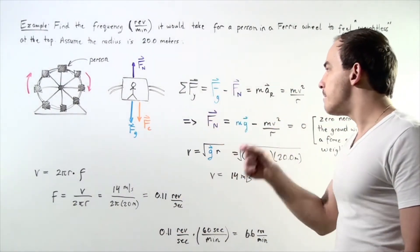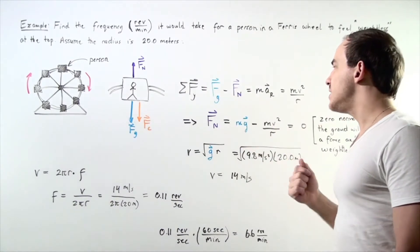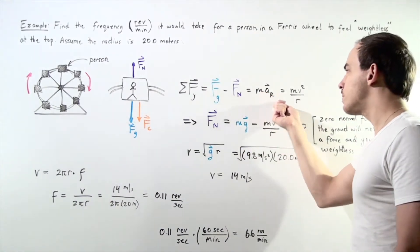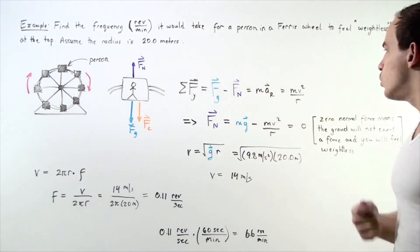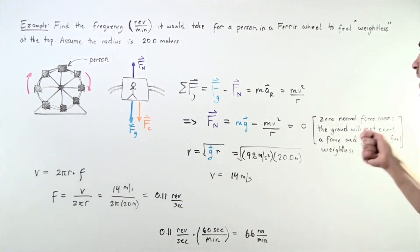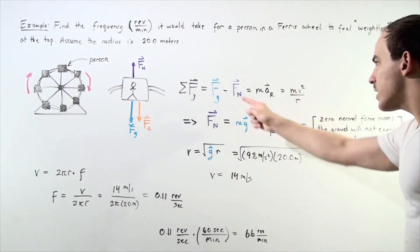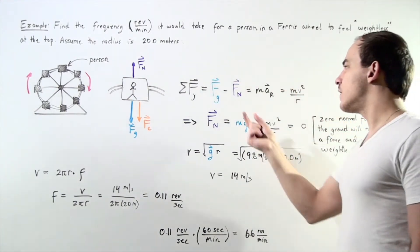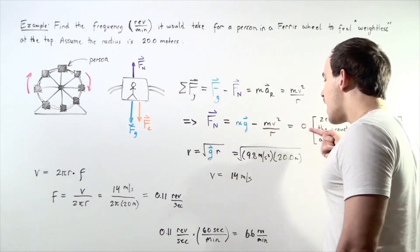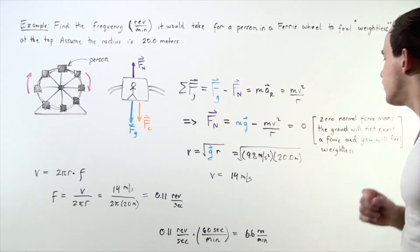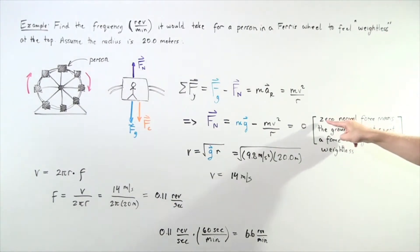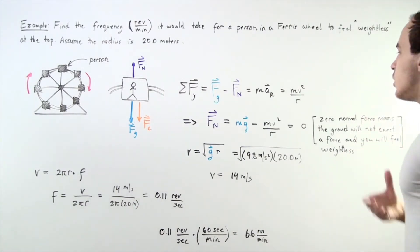So the gravitational force minus the normal force is equal to mass times our centripetal acceleration, which is equal to mass times v squared divided by r, because our radial acceleration is equal to v squared divided by r. Let's rearrange our equation and solve for the normal force. We get the following equation and now we set this equal to zero because zero normal force means the ground will not exert a force and you will feel weightless.